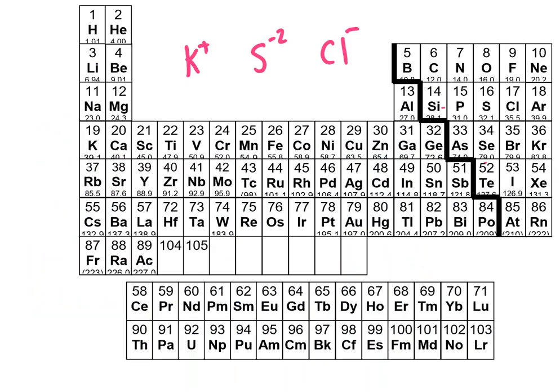If we look on the periodic table sulfur is here but its electron configuration with two electrons would be argon. Chloride again it's here but if it gains an electron it has electrons like argon. And potassium as well over here, if it loses an electron it has the configuration of argon. So all three of those have the same number of electrons.